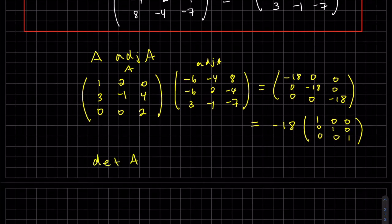If I take the determinant of A, that is negative 18. Of course, I didn't figure it out, but you can figure it out for practice. So we have a formula here. So A adjoint A is equal to the determinant of A.